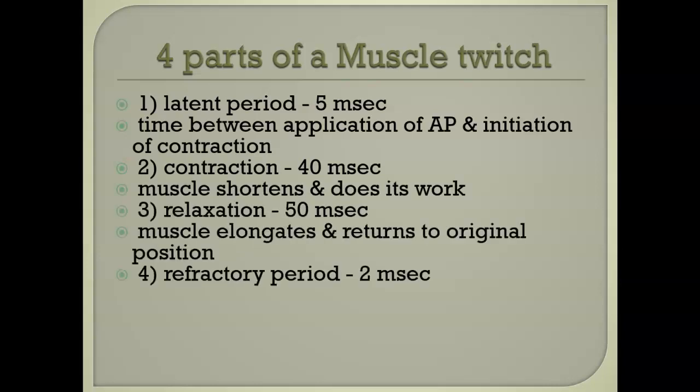The latent period: for a muscle to twitch, you have to generate a thought. You have to tell it to do this. You think about moving the muscle, you send the signal via the brain all the way down the spinal cord, through the motor neuron, out to the muscle, and it hits. It takes about five milliseconds. That's the latent period.